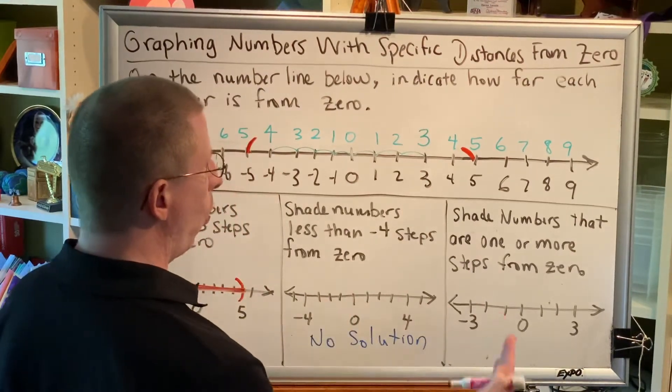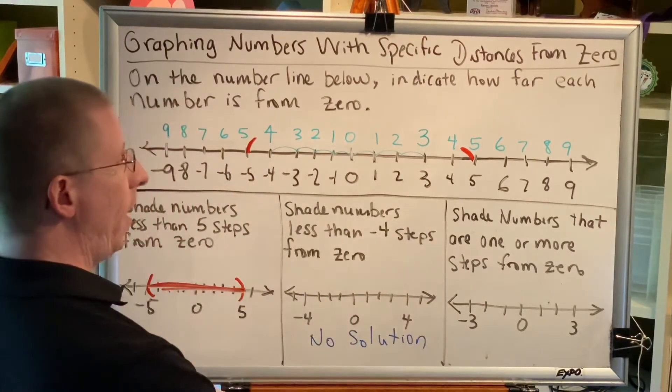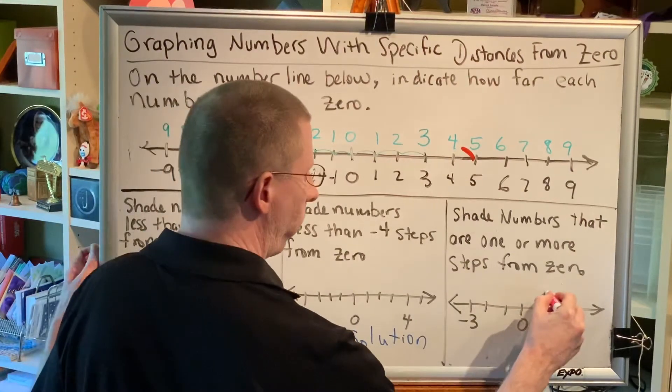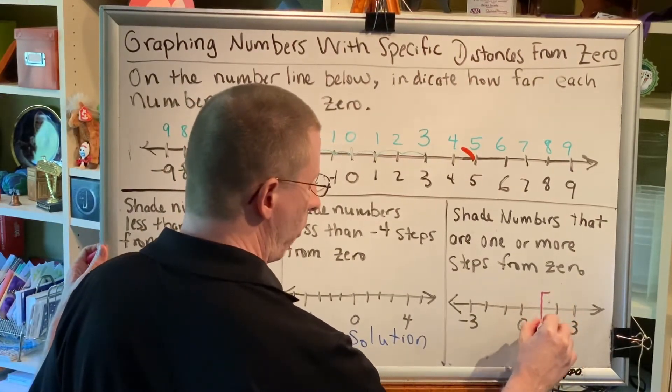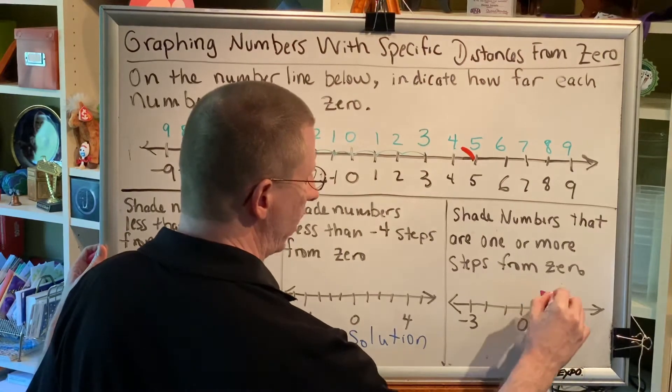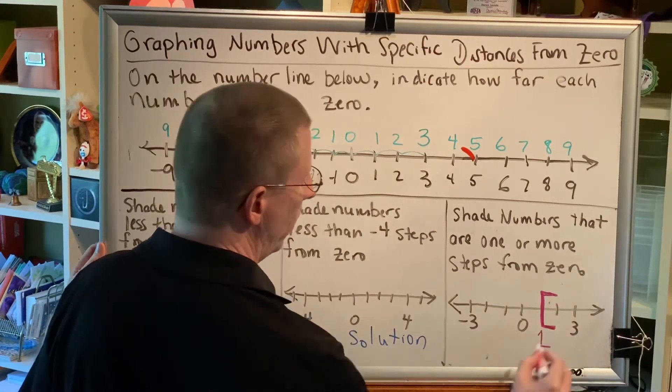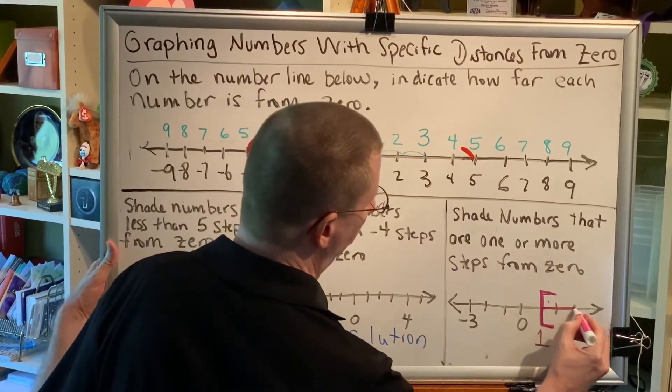Or 1 step to the left and then keep going. So I'll put a bracket at 1 to indicate that I can go exactly one step to the right, and then anything beyond that would be more.